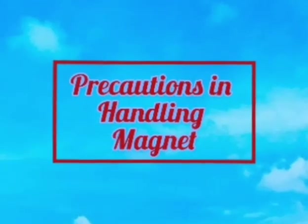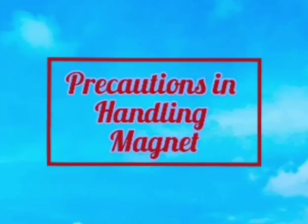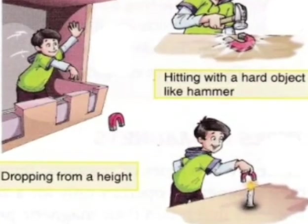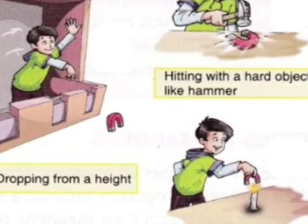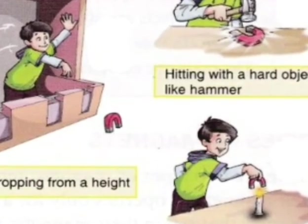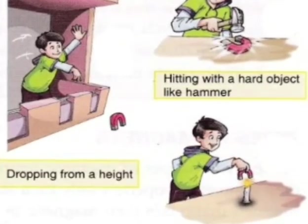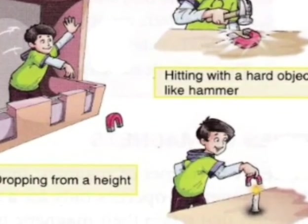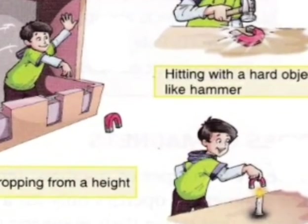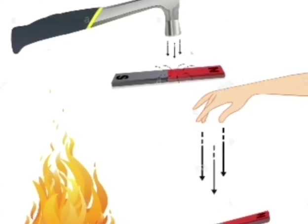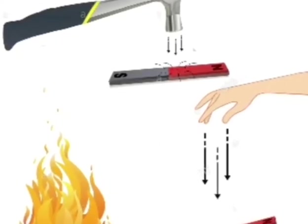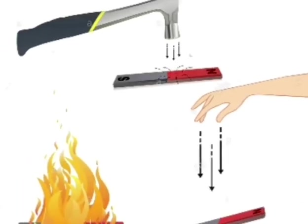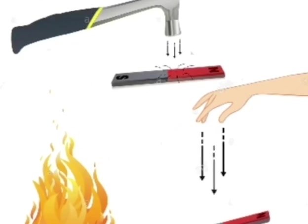Precautions in Handling Magnet. If a magnet is heated, hammered or dropped from a height, the magnetism of the magnet can be destroyed totally or partially and make them useless. Agar magnet ko heat kiya jaye yaani ki uska temperature increase kar diya jaye ya phir hammer se hit kiya jaye ya height se niche gira diya jaye to uska magnetism khatam ho jata hai. Aur wo magnet useless ho jata hai.